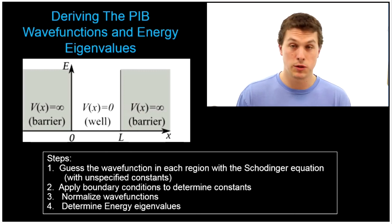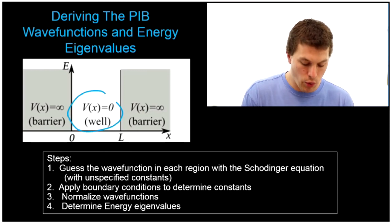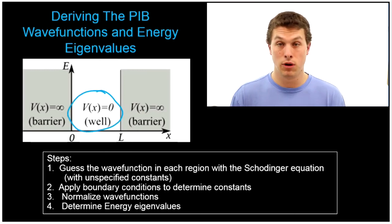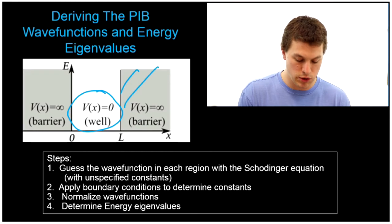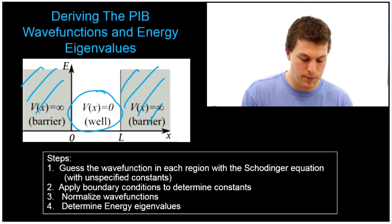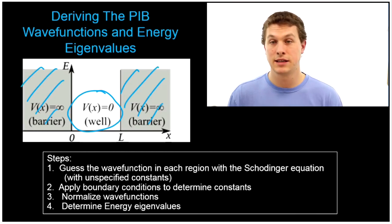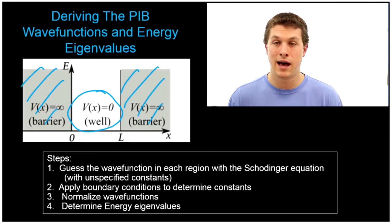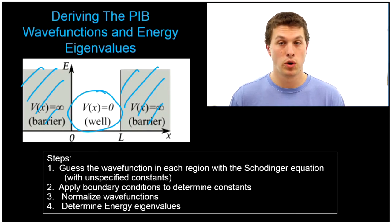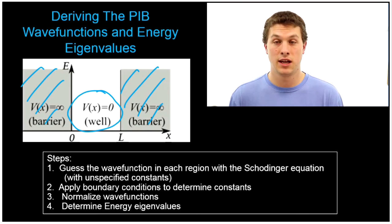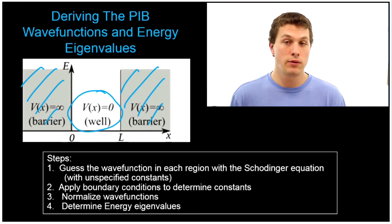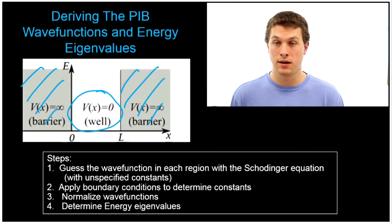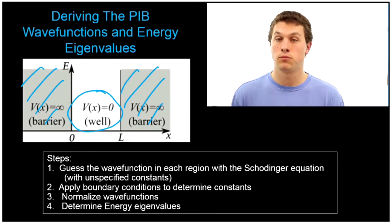This is what the potential looks like. We have a well where it's zero, and then we have these walls where the potential is infinite. Basically, you drop an electron down into a well that's infinitely deep, and we want to know how the electron is going to behave down there. Figuring out what these wave functions are is a little complicated — it takes quite a few steps.